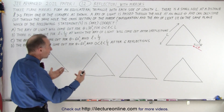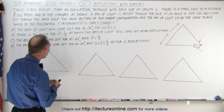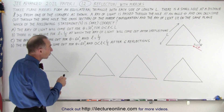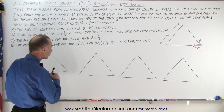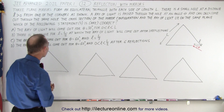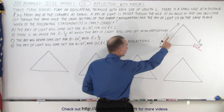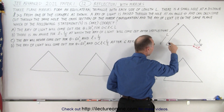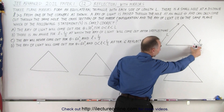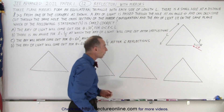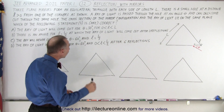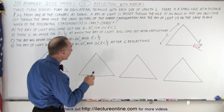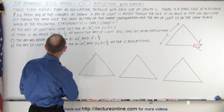We're dealing with reflection and mirrors. Three plane mirrors form an equilateral triangle with each side of length L. There's a small hole at a distance l (which is bigger than zero) from one of the corners. All three sides have length L and the angles are 60 degrees. A ray of light is passed through the hole at an angle theta and can only come out through the same hole. The cross section of the mirror configuration and the ray of light lie on the same plane.